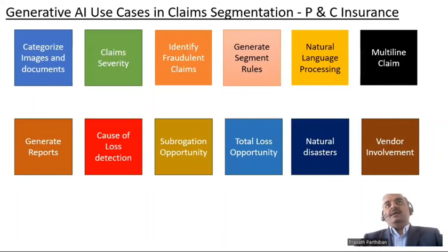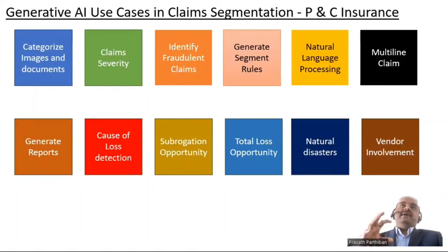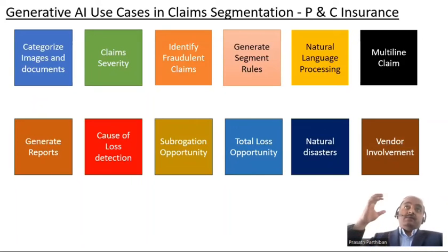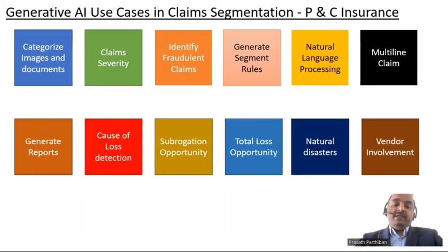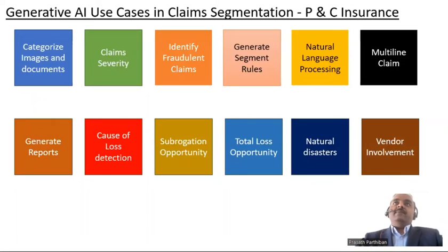Cause of loss — when insureds are reporting data manually, we may not always have accurate data. But because AI can read data from the past, and at the same time read data on the location where the loss happened, the cause of loss can be accurately detected based on AI's ability to read the data.